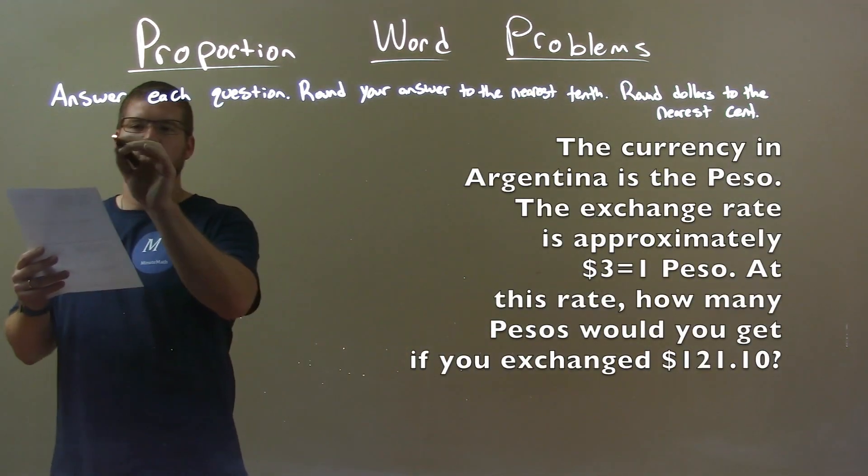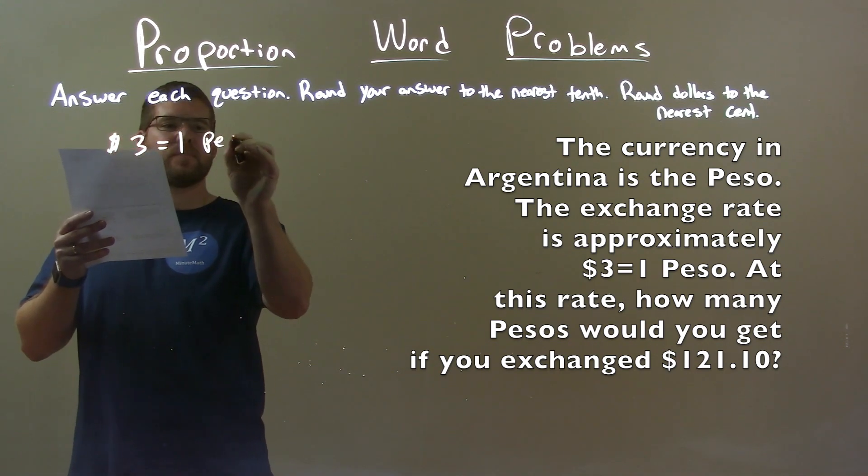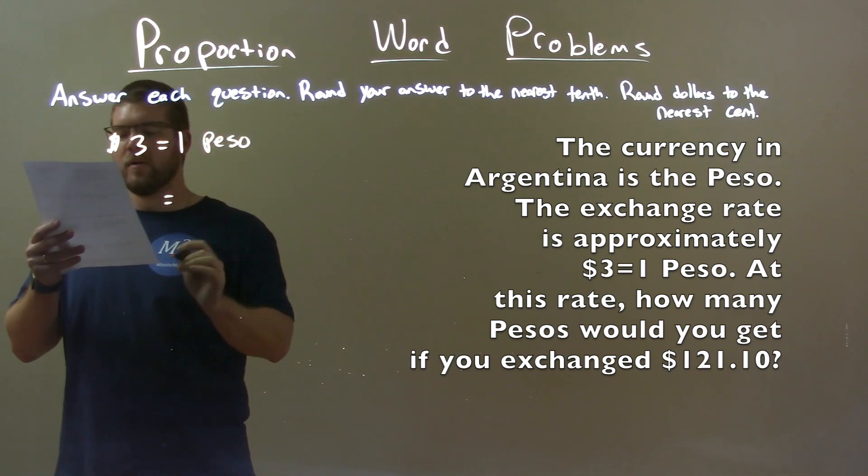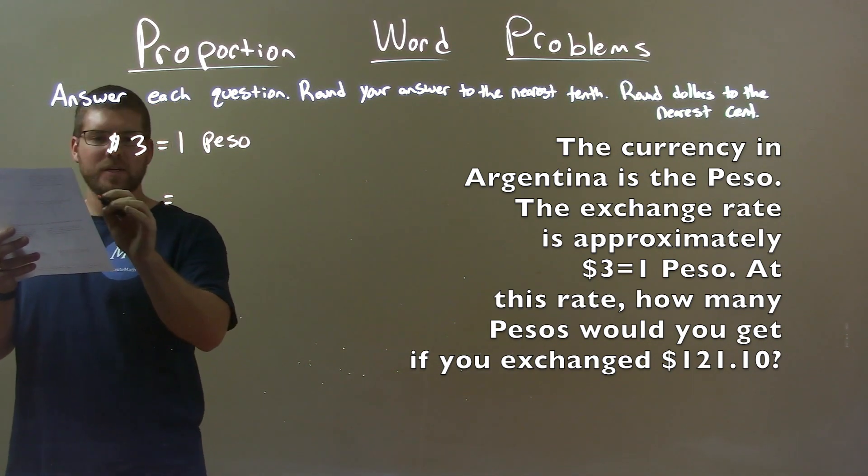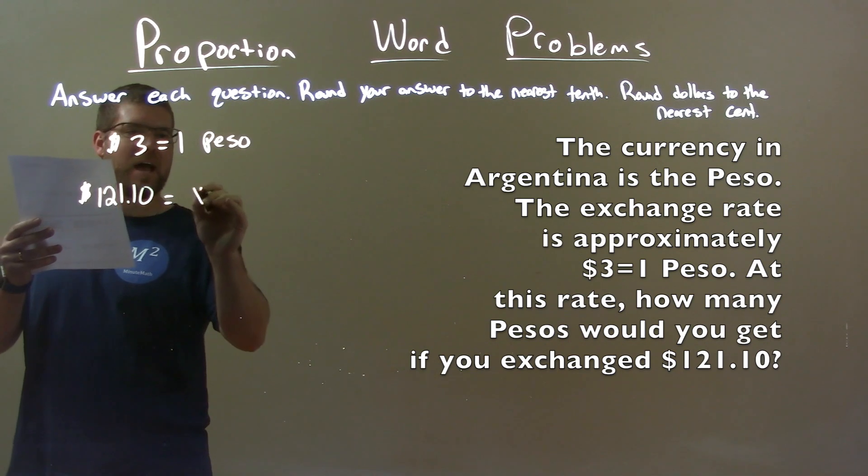So one thing they tell us right off the bat here is three dollars equals one peso. And we want to find out how many pesos we would get if we exchanged 121 dollars and ten cents. How many pesos?